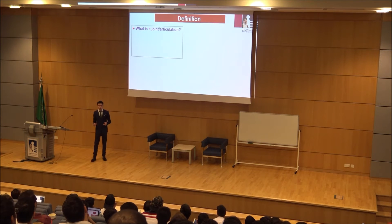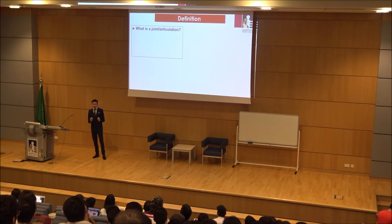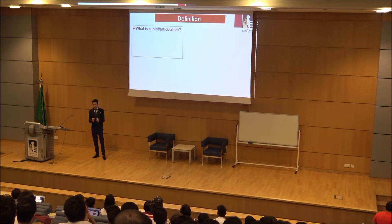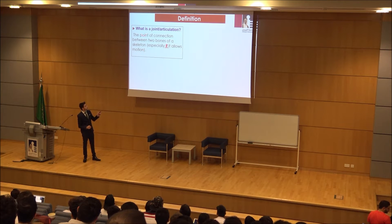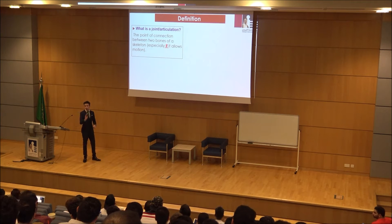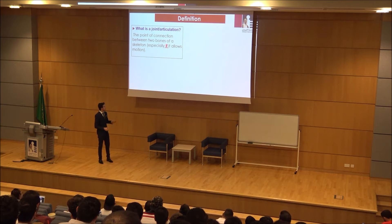Definition of a joint — what is a joint? Very simply put, a joint is the point of connection between two bones or more to allow the skeleton to give us mobility. As you can see, point of connection between two bones or more, especially if it allows motion, mobility, movement.